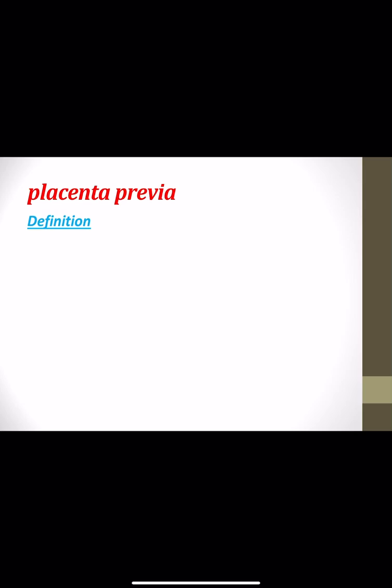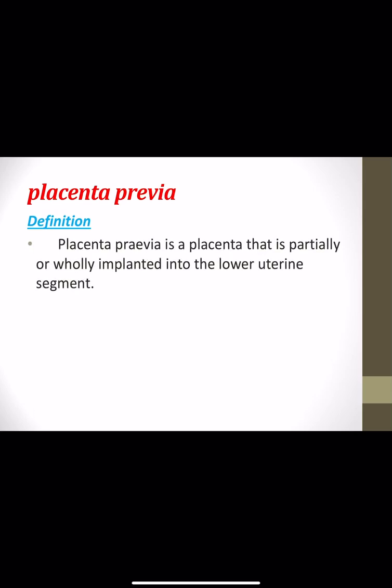The first cause is placenta previa. By definition, placenta previa is a placenta that is partially or wholly implanted into the lower uterine segment. The placenta should normally be in the fundal region, so if it lies in the lower uterine segment, we call it placenta previa.